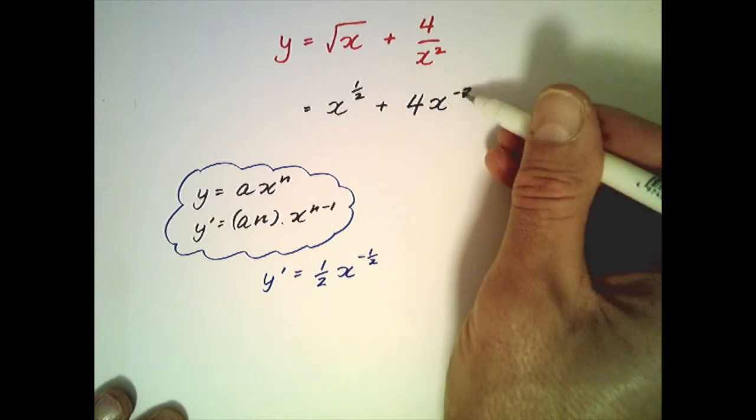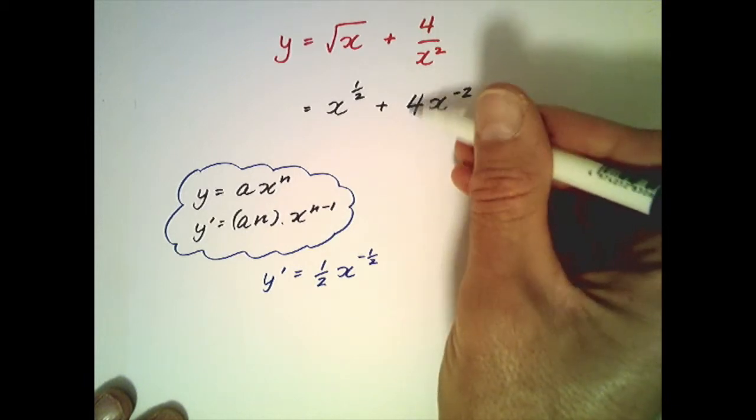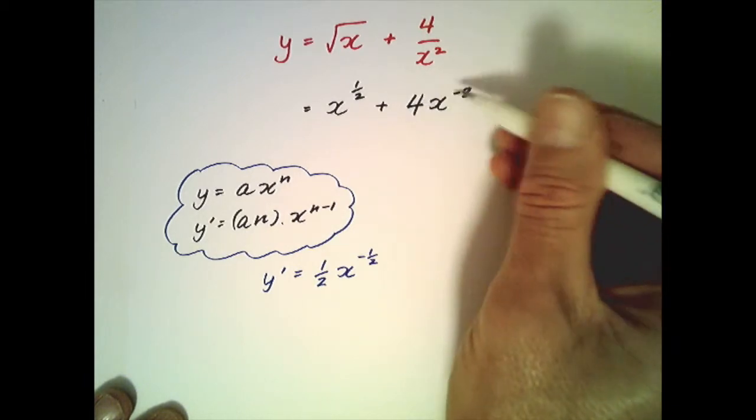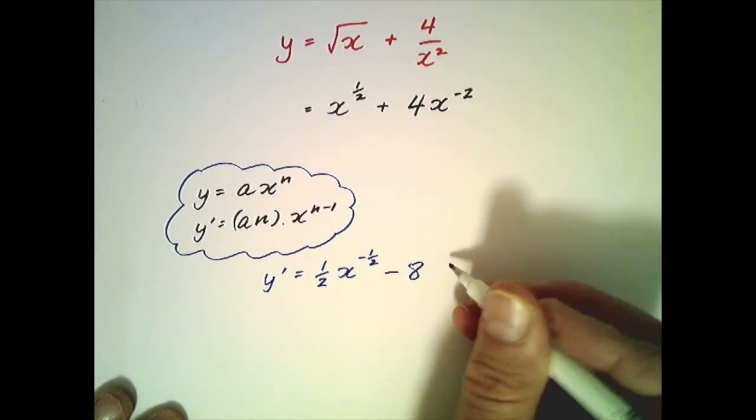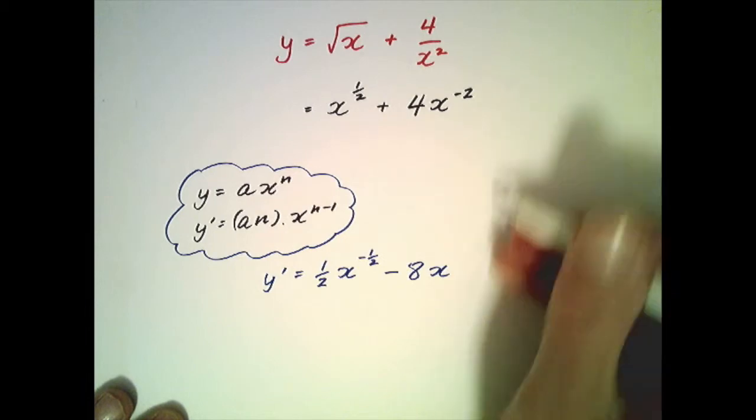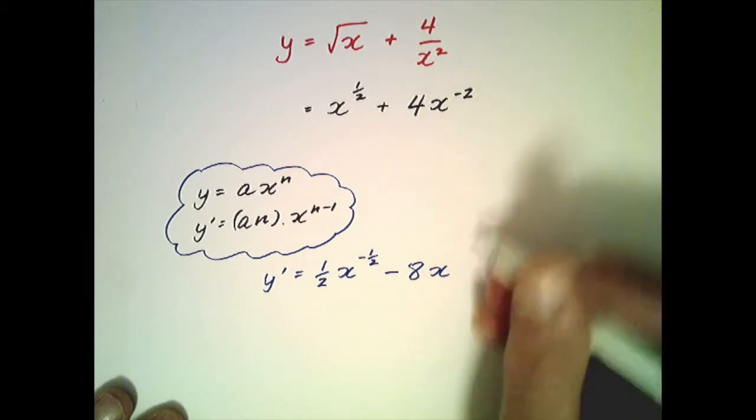The same rule applies here: we take the power and multiply it by the term at the front, so 4 multiplied by negative 2 is negative 8, so we put minus 8 there, and we drop the power by 1, which means this becomes x to the negative 3.